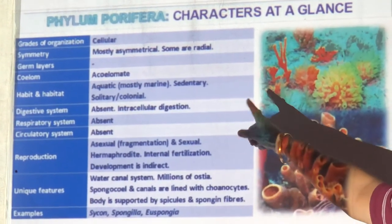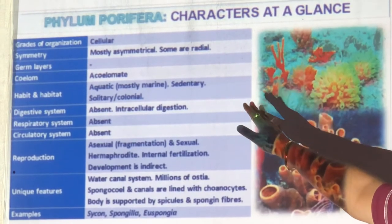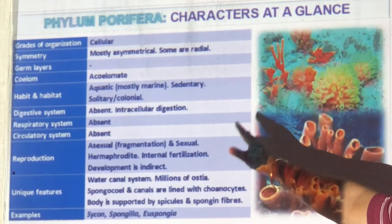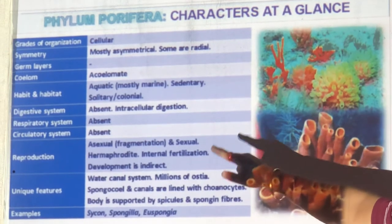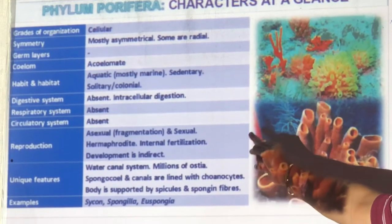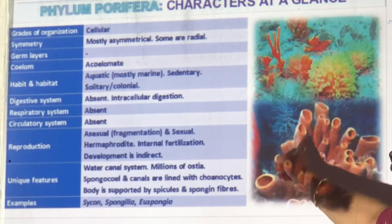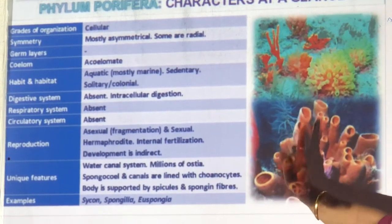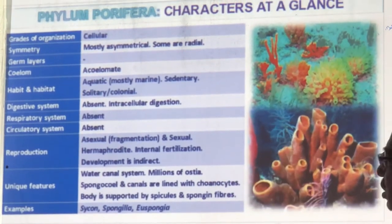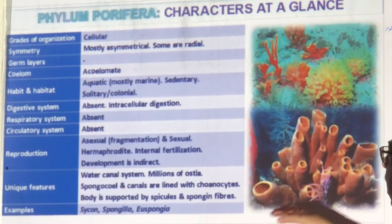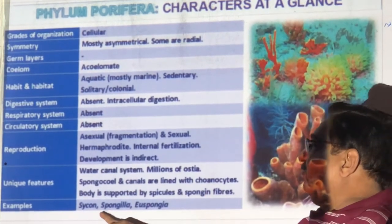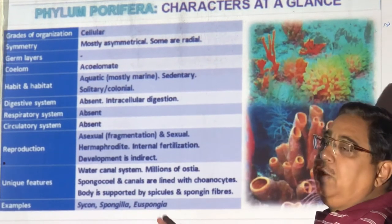Revision of Porifera: cellular organization, asymmetrical or radial, no germ layers, acoelomate, aquatic, sedentary, colonial or solitary. No digestive system — intracellular digestion only. No respiratory system. No circulatory system. Reproduction: asexual by fragmentation and sexual. Hermaphrodite, internal fertilization, larva present — development is indirect. Unique features: water canal system with ostia, spongocoel, osculum, and choanocytes (collar cells), silica spicules and spongin fibers. Examples: Sycon, Spongilla.